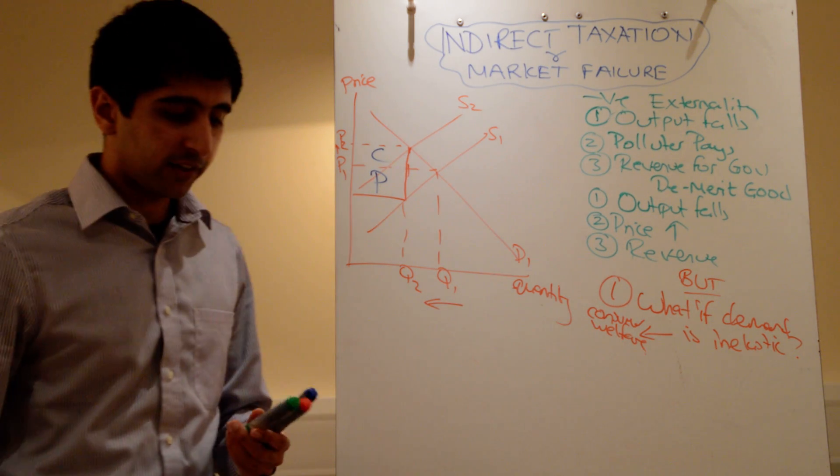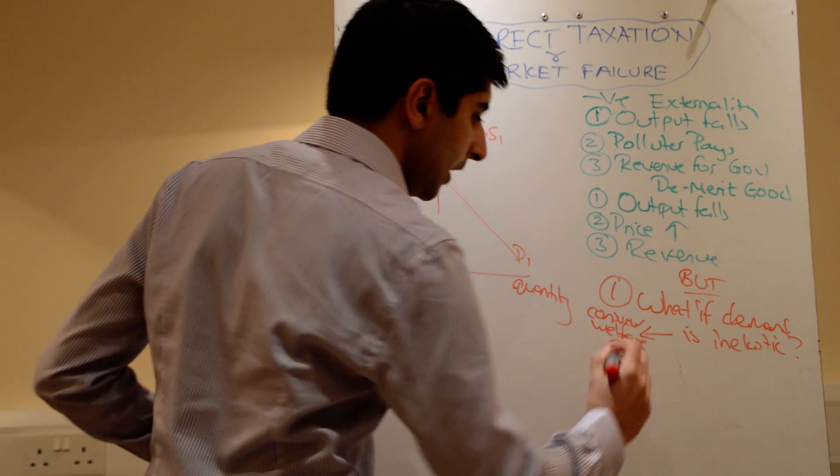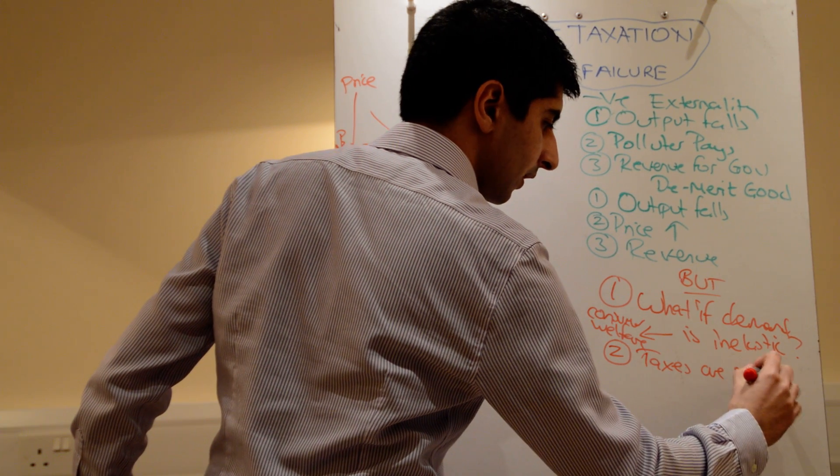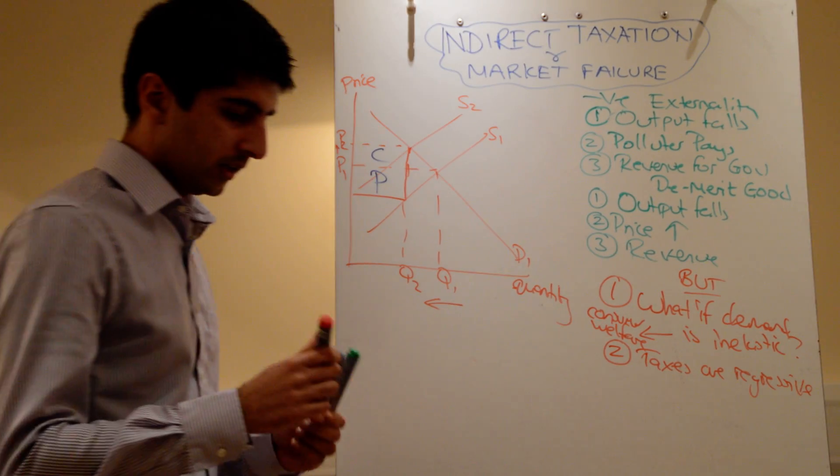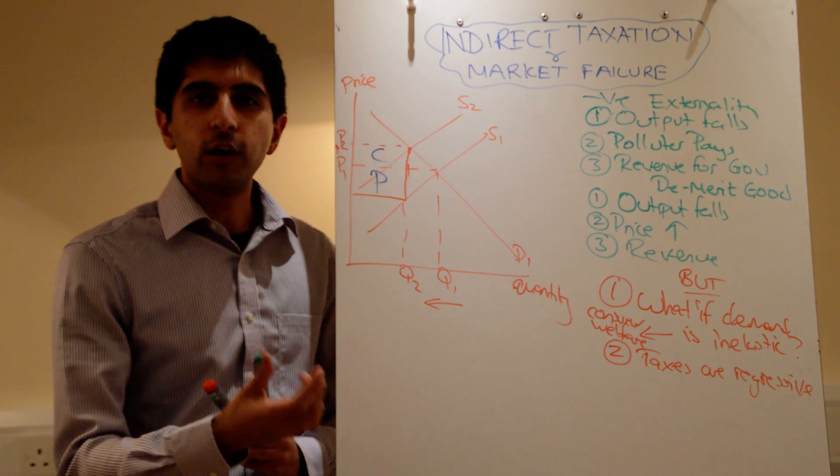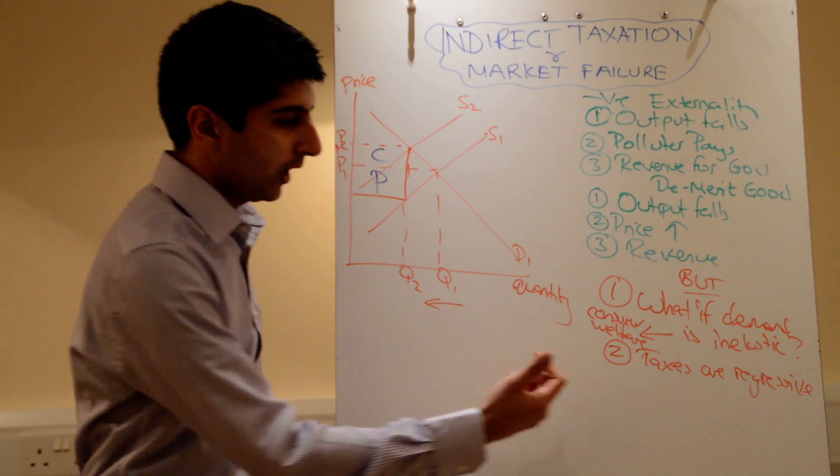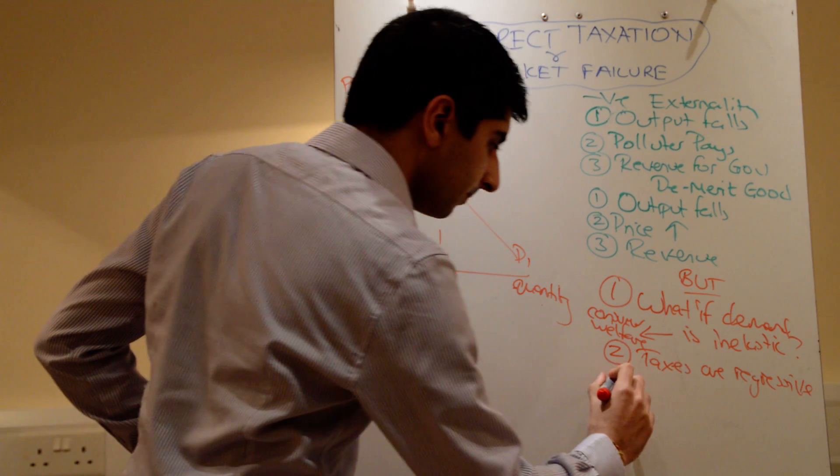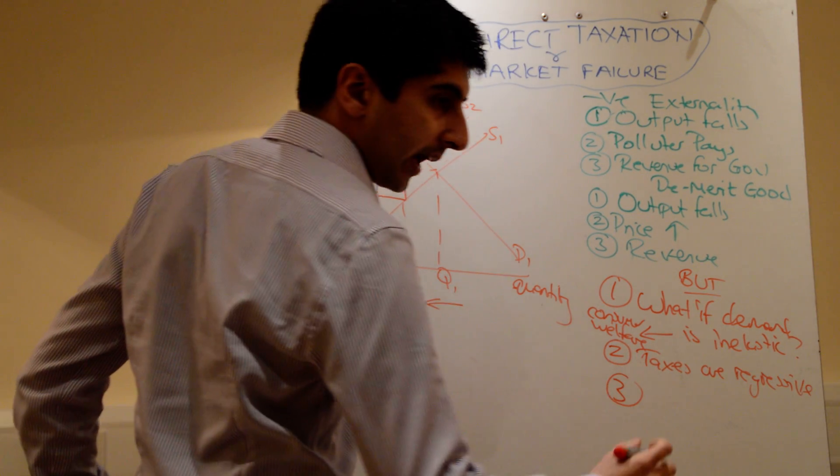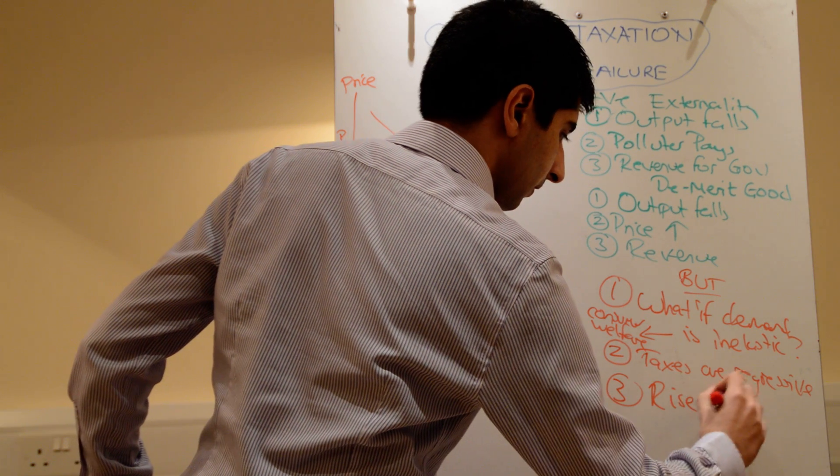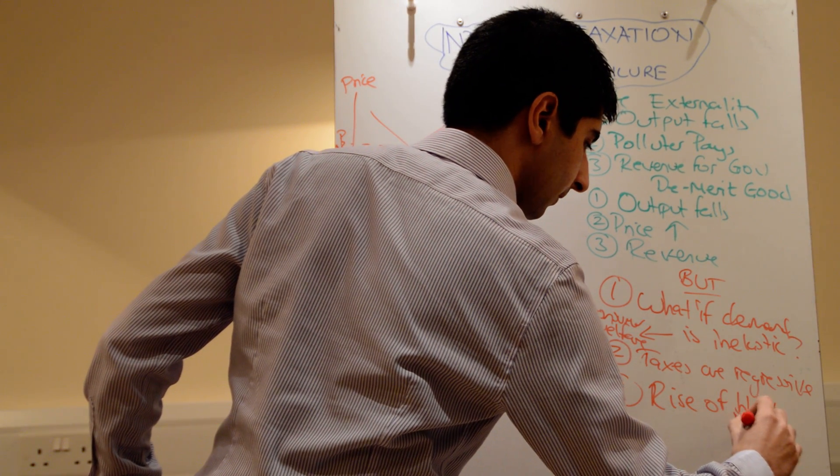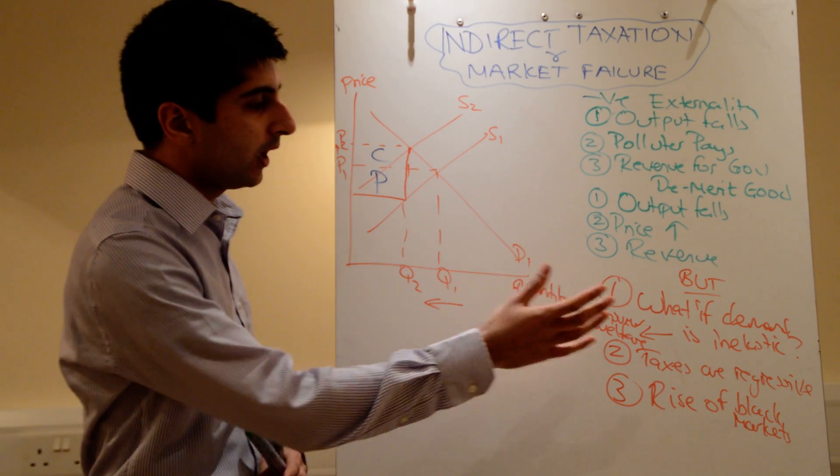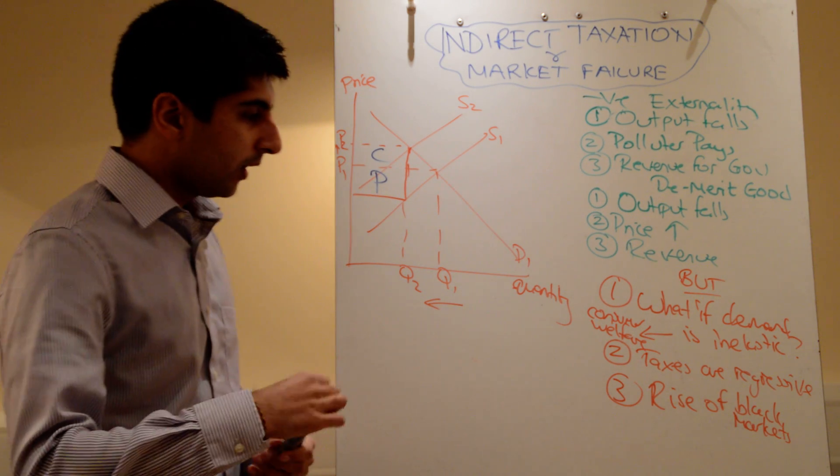Even more than that, you can say taxes tend to be regressive. Taxes are regressive. They hit people on lower incomes much harder than people on higher incomes. And at the same time, there is a potential rise of black market activity, especially if the tax is very severe. You might get black markets that come about.